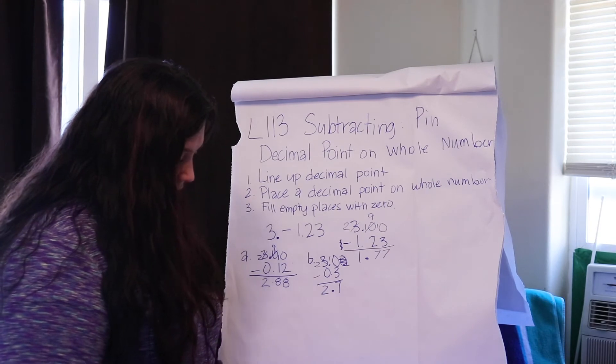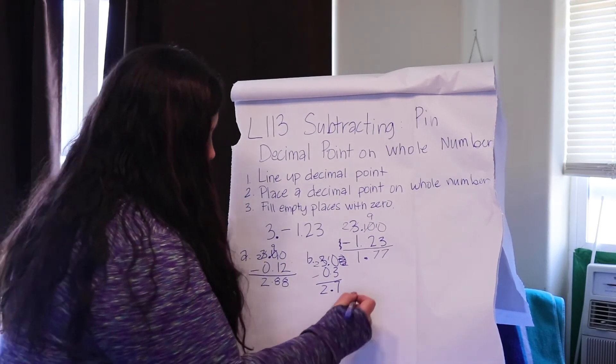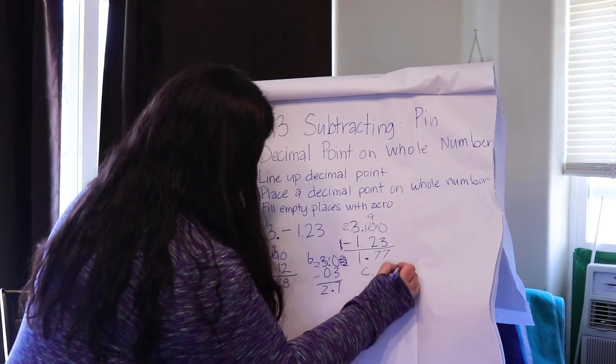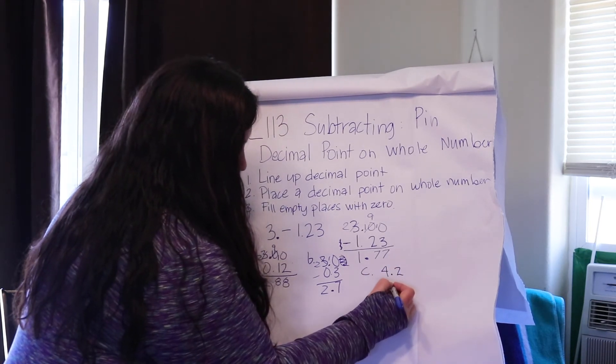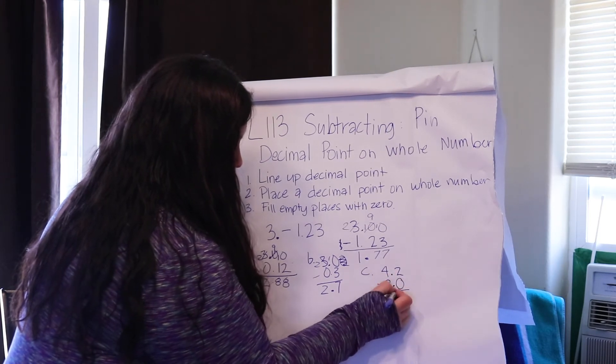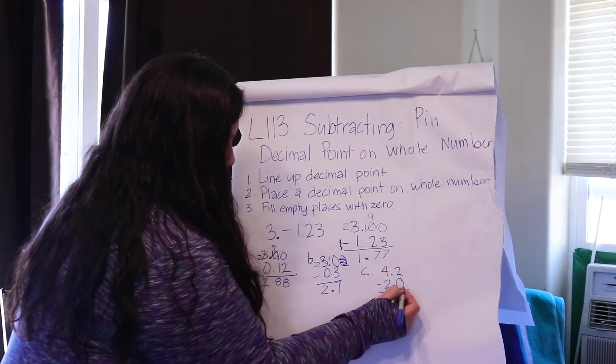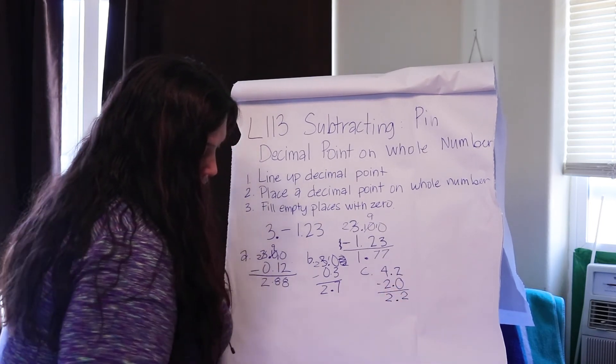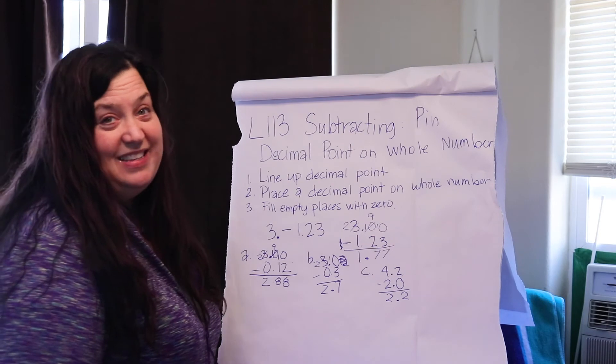Okay, let's take a look at C. We have 4.2 minus 2, so what are we going to do with the minus 2? Yeah, we're going to put it over here and put our decimal point and put a 0 to hold our place. 2 take away 0 is 2, we have a decimal point, 4 take away 2 is 2, and we get the answer 2 and 2 tenths.